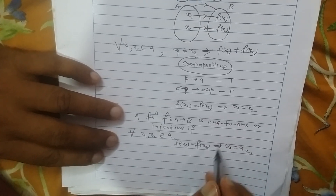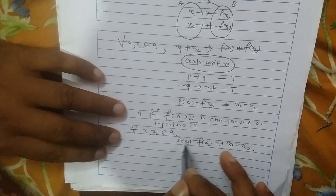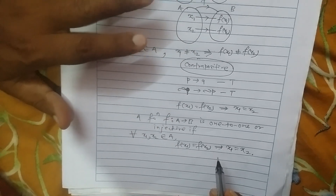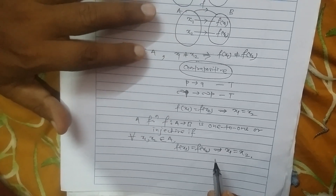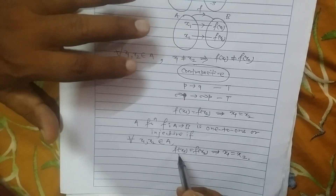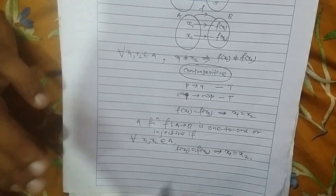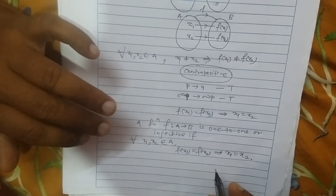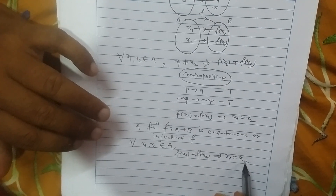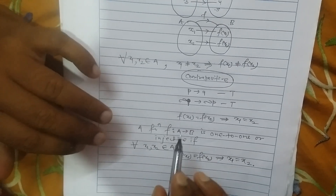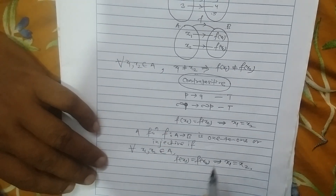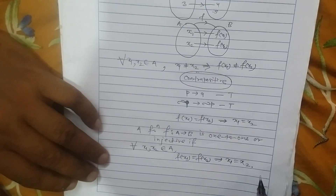Now we apply this mechanism to check whether a given function is 1-to-1 or not. We simply take x1, x2 in the domain, set f(x1) = f(x2), and simplify the result. If we are able to write x1 = x2, then the function is 1-to-1; otherwise it is many-to-1.